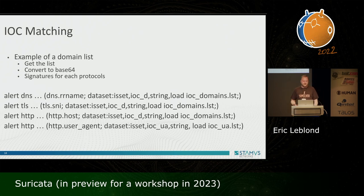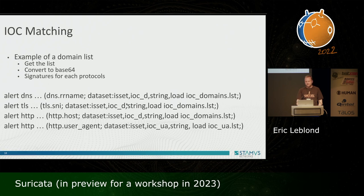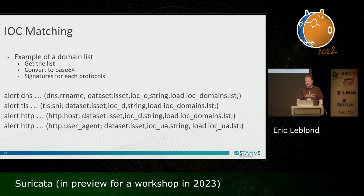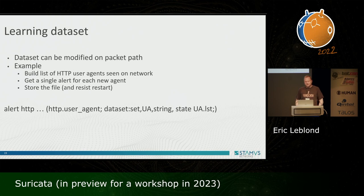One usage for this is IOC matching. You just need to get a list — for instance a list of domains — convert it to base64, and then write a signature for each protocol. For DNS, you can say: if the DNS server name is in this set loaded from this file, then I will have an alert. And you can use the same list to do this for TLS using TLS Server Name Indication and for HTTP host. It's not just for domains — if you have a list of user-agents you can do the same, using HTTP user-agent with dataset is-set.